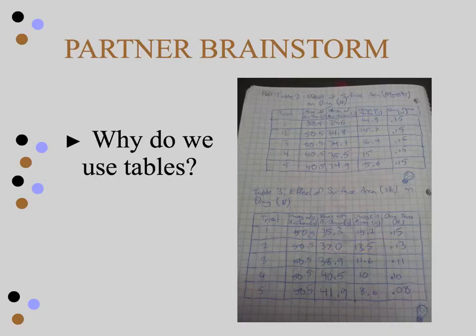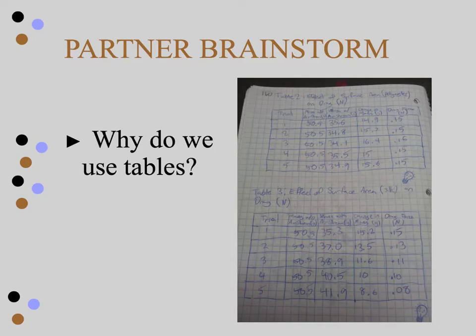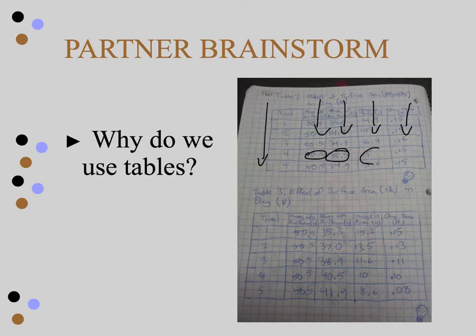So we're going to talk about how to present data. The first thing we've talked about hopefully in class is why we use tables — things like keeping data organized so that we can group data. As you can see, in this first column we have the individual trials going down, and the various pieces of information in every next column. So it's very easy to look up and see that in trial 4 we had this data for this variable, this one for another variable, etc. We can very easily group and organize data — it's a nice way to keep things neat and tidy.